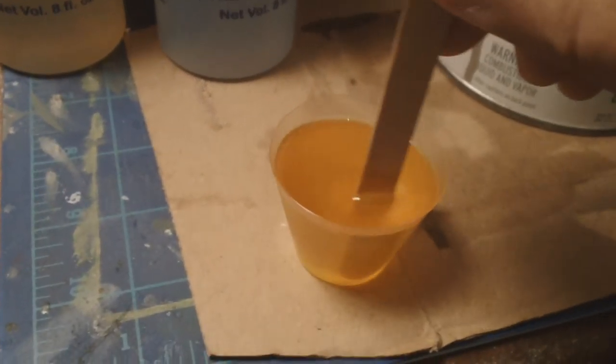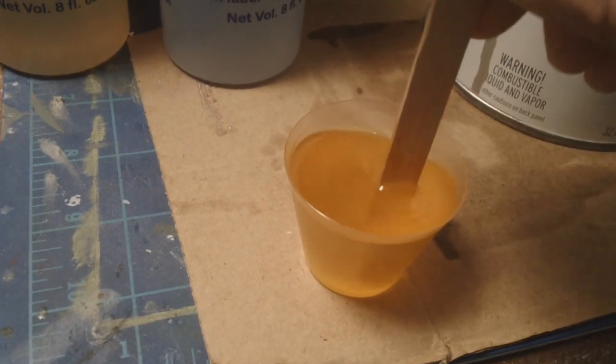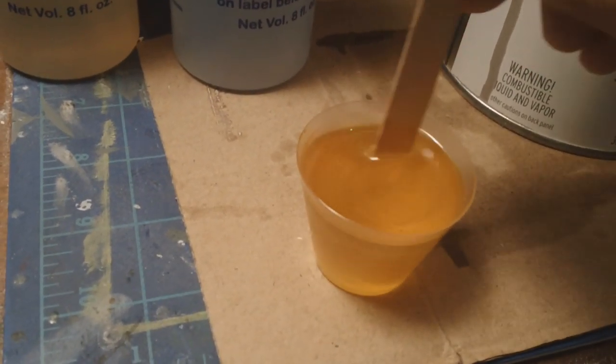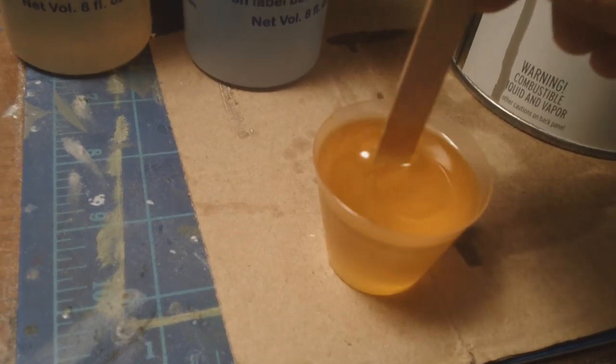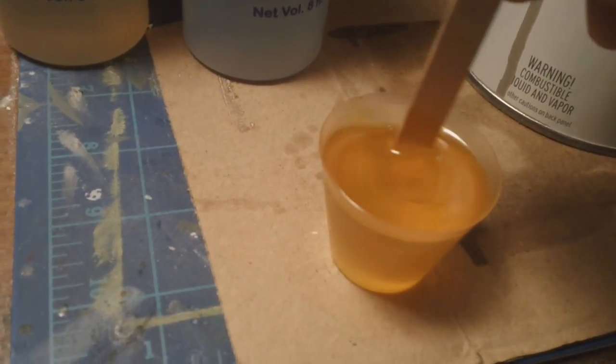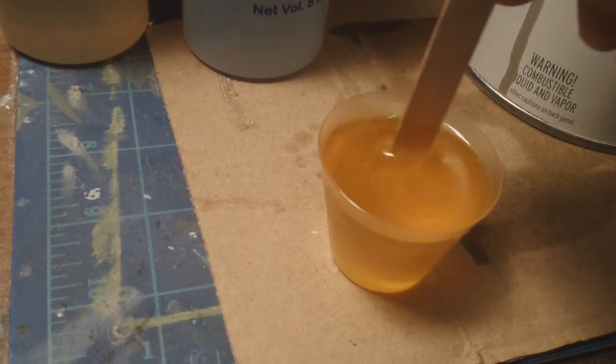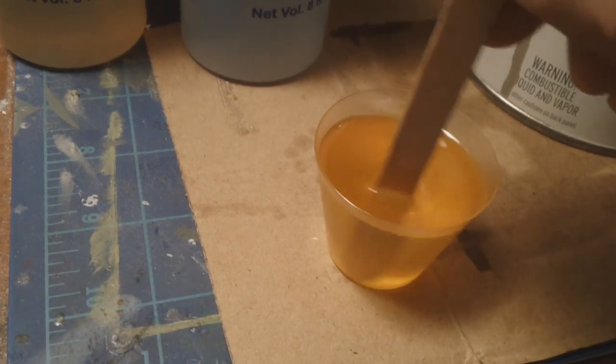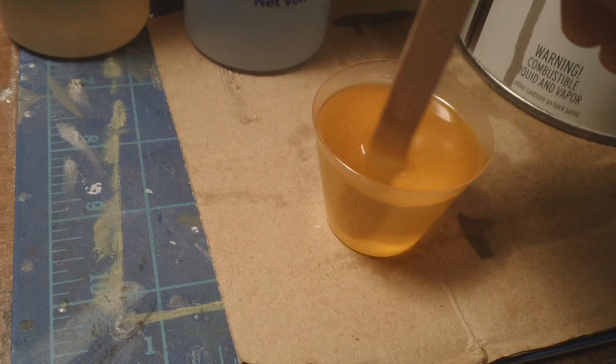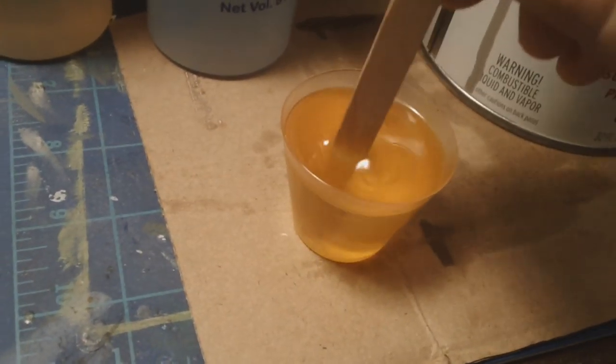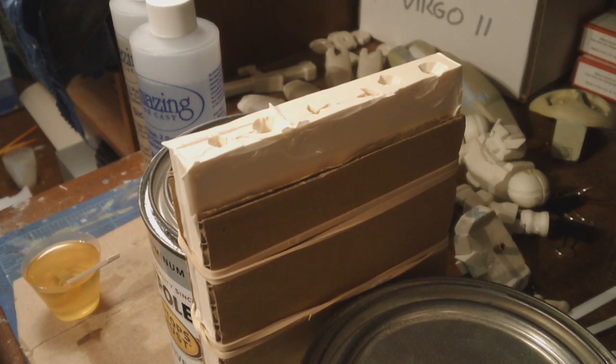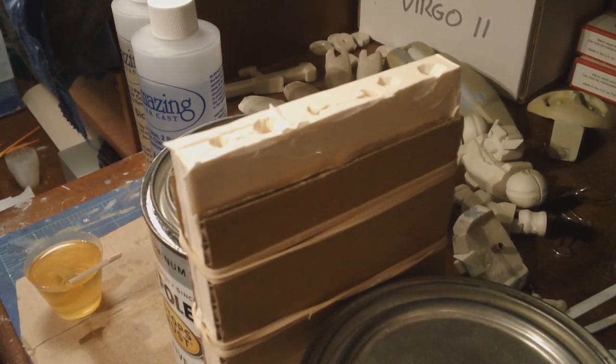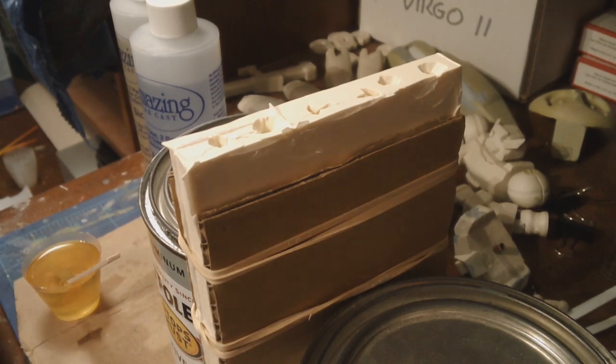And the instructions say to pour the two halves of the resin together and mix them very, very slowly and gently. Trying to mix as little air into the resin as possible. And it says in the instructions to mix it for a full three minutes. So, that's what I'm going to do. Alright, so I've mixed up the resin two halves together. Let it sit for a few minutes to let all the bubbles kind of rise to the top. And now we are finally ready to pour into the mold.